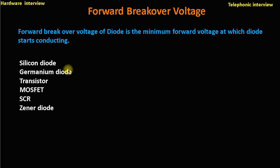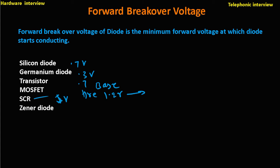For example, a silicon diode has 0.7V, a germanium diode has 0.3V, a transistor has 0.7V in the form of base voltage, a MOSFET has a threshold voltage starting from 1.2V and above, an SCR also has an operating voltage of around 1V, and a zener diode also has an operating voltage — breakover voltage when used in the forward condition — starting from 0.7V.